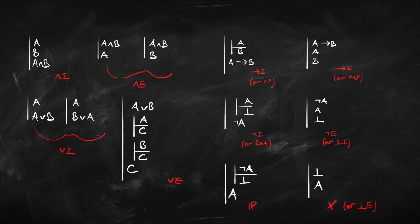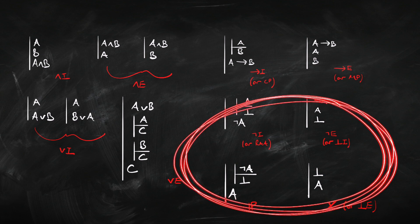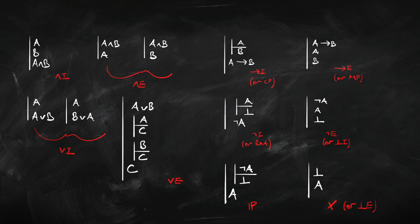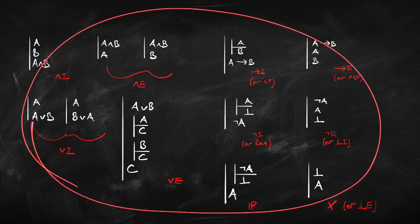So these are the rules that we introduced, but when I introduced them I said there are actually some options — particularly our rules for negation and for the falsum. We can use these rules but we could have used some slightly different rules. So we're going to look at some alternative rules now and see that we can derive these rules from this set we've got here. What does it mean to say that we can derive a new rule from our existing ones? It's probably easiest to see with an example.